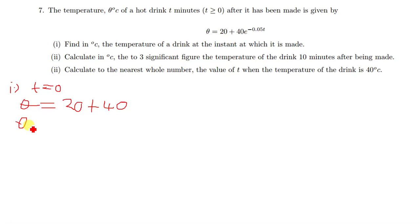When you add 20 plus 40, your value of θ, which is your temperature, is just going to be equal to 60 degrees Celsius. Let's quickly move on to the next question. The next question says calculate in degrees Celsius the temperature of the drink 10 minutes after it has been made.